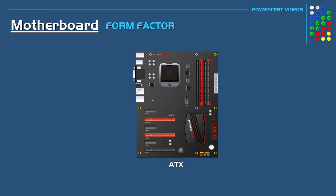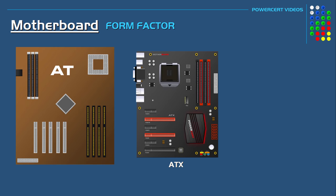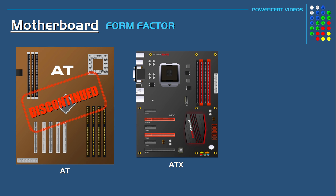Prior to the development of the ATX there was the AT form factor. AT stands for Advanced Technology. This was used back in the 1980s and was developed by IBM. AT motherboards are 12 by 13.8 inches in size and they are no longer in development since the succession of the ATX.